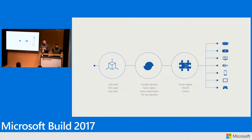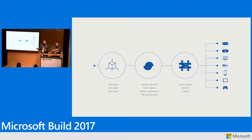When your asset is optimized, you take the output and put it into the authoring tool of your choice — typically a real-time 3D engine. And if you want your application to support multiple target platforms, like mixed reality or mobile, just take the source asset and run it through Simplygon again with a settings file suitable for that platform. So you have a single source of truth asset, but can publish to multiple platforms.